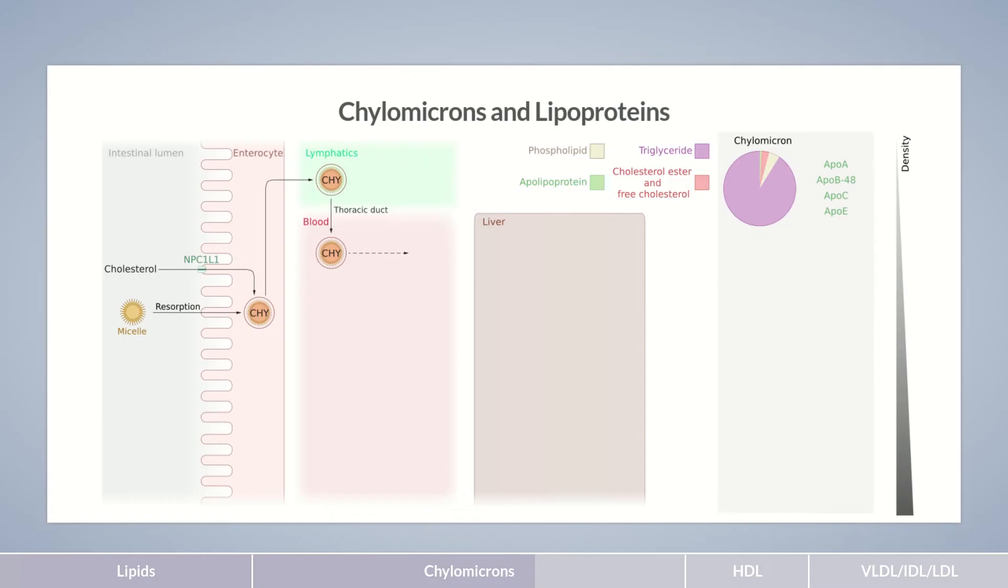In addition to chylomicrons, which have the lowest protein content and therefore have the lowest density of all particles, there are very low-density lipoproteins, intermediate-density lipoproteins, low-density lipoproteins, and high-density lipoproteins. The HDL and the majority of VLDL particles are produced in the liver and secreted into the blood. Here, IDL and LDL particles are formed during the breakdown of VLDL.